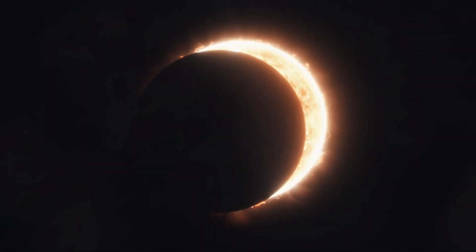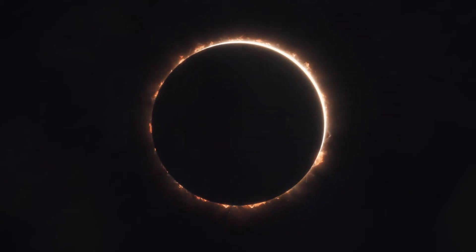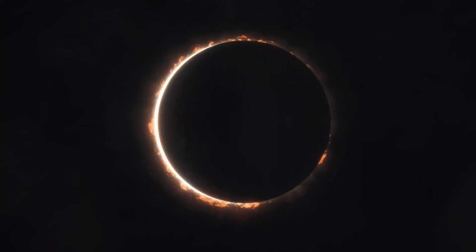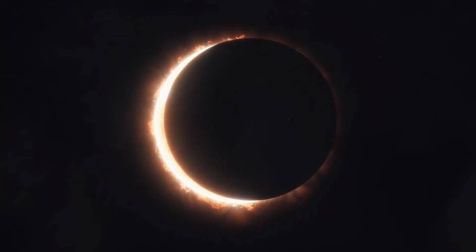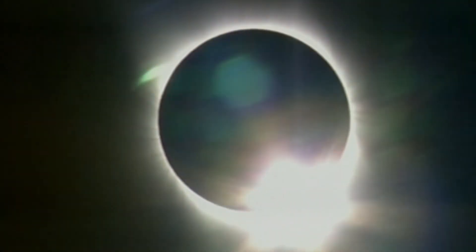So when this alignment occurs, if you happen to be in the path of the Moon's shadow, you will see the Moon appearing as a dark disk in the sky, covering the Sun perfectly.